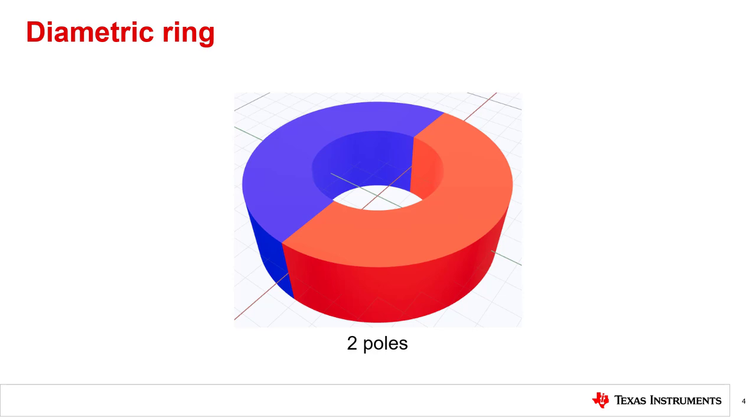A diametric ring is composed of two magnetic poles that are parallel along the diameter of the magnet, splitting the flat circular faces in half. The diametric ring will have the same number of poles in the top or the outer round portion of the magnet.